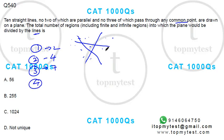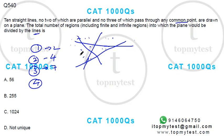If I draw a fourth line and extend it, you get: one, two, three, four, five, six, seven, eight, nine, ten, eleven — this gives you eleven regions.